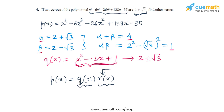What we can do now is divide P(x) by Q(x) to find R(x), and then find the zeros of R(x), which will be the remaining two zeros of P(x). So let's divide P(x) — this fourth degree polynomial — by Q(x), which is x squared minus 4x plus 1.